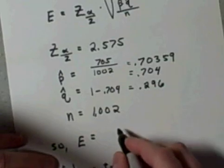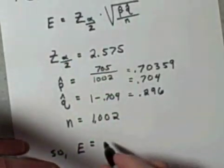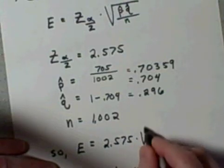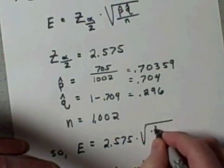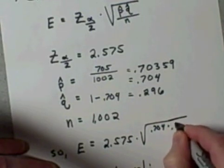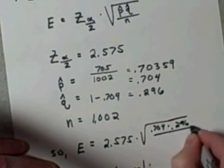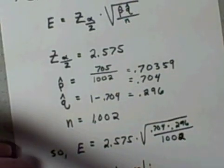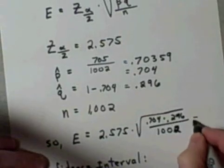So the margin of error E is going to be equal to 2.575 times the square root of 0.704 times 0.296 divided by my sample size of 1002.